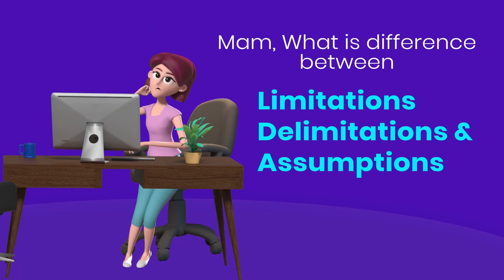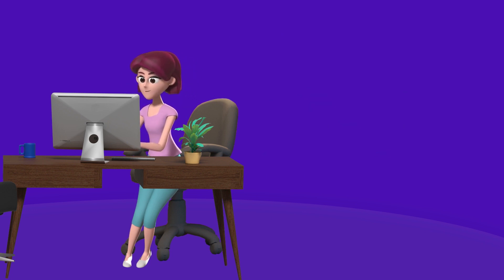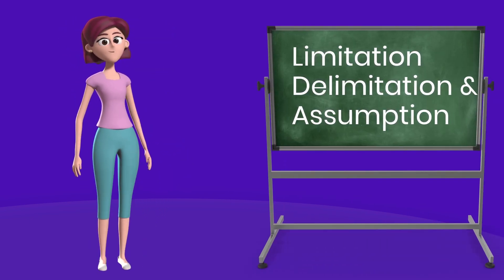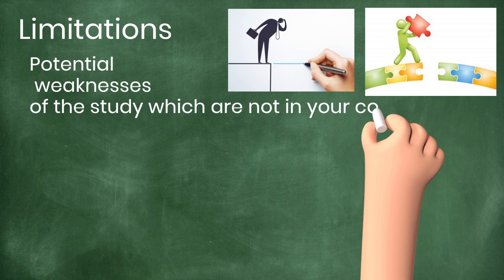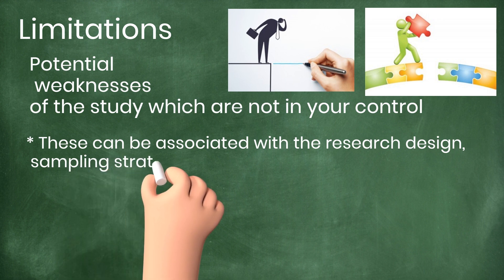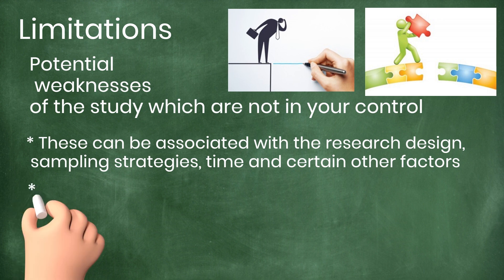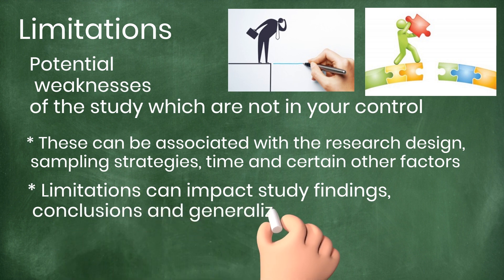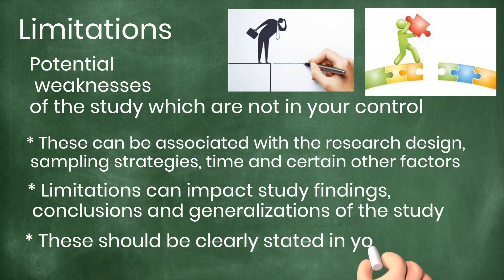What is the difference between limitation, delimitation, and assumption? Let's talk about limitations first. Limitations are potential weaknesses of the study which are not in our control. These can be associated with the research design, sampling strategies, time, and certain other factors. In addition, limitations can impact your study findings, conclusions, and generalizations of the study, so these should be clearly stated in your study.